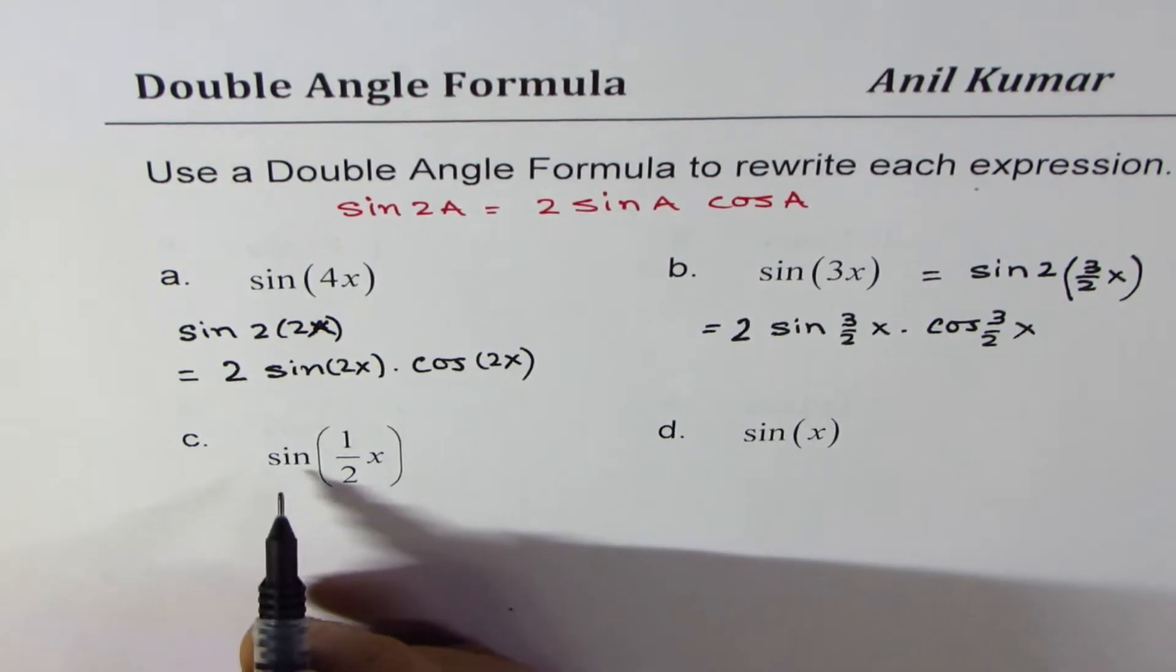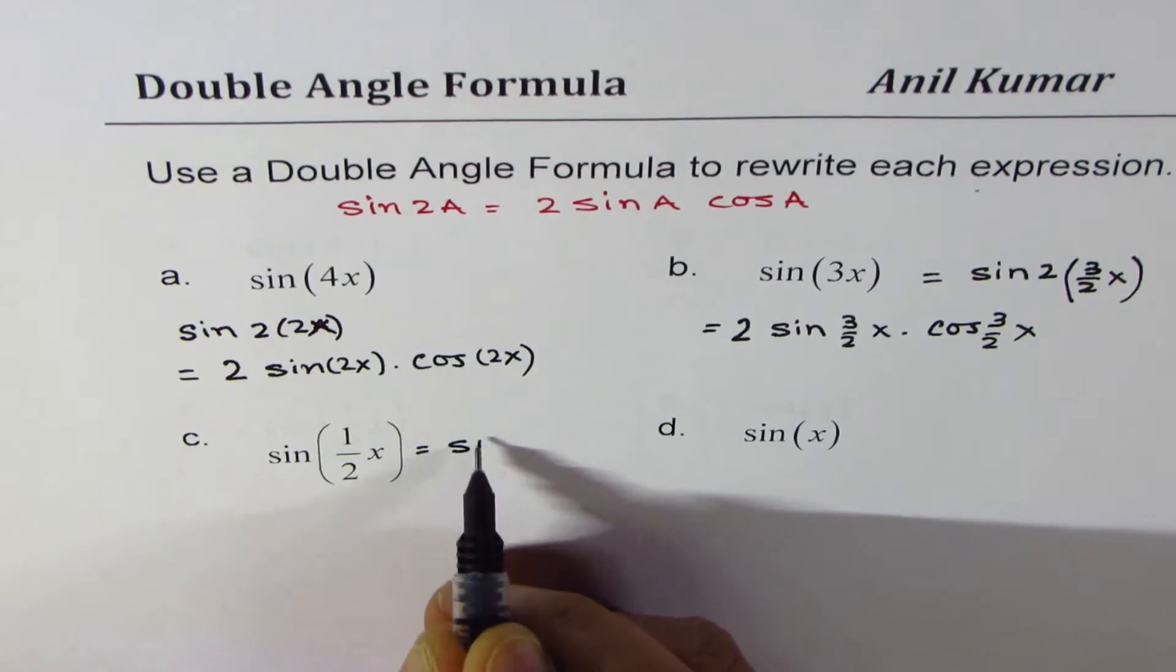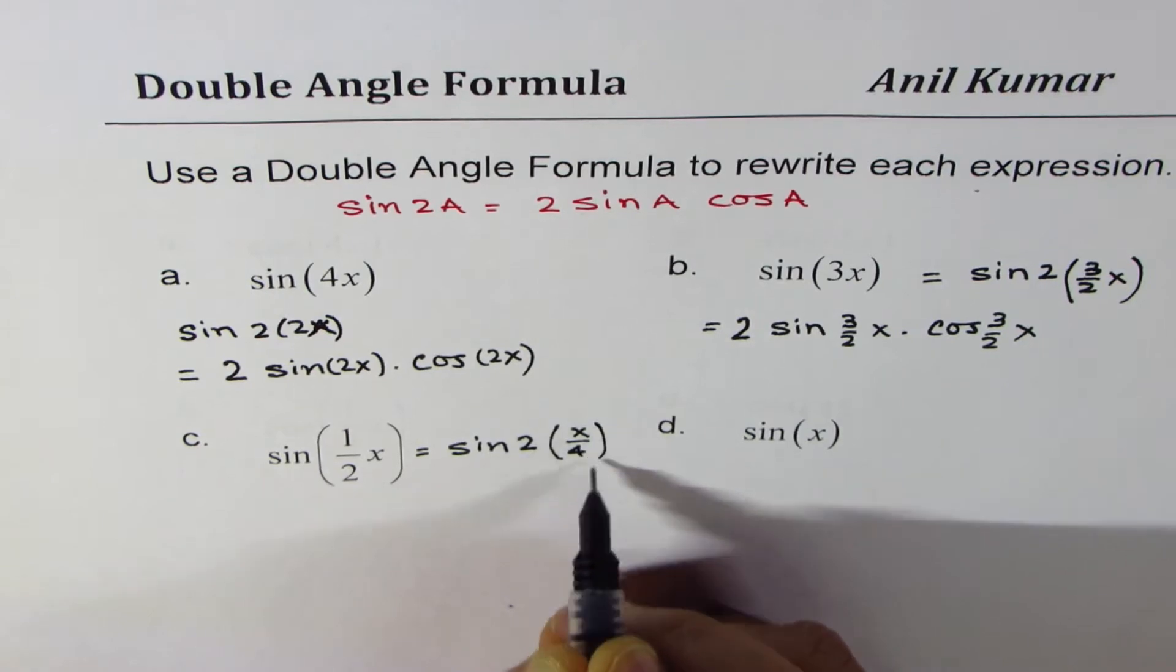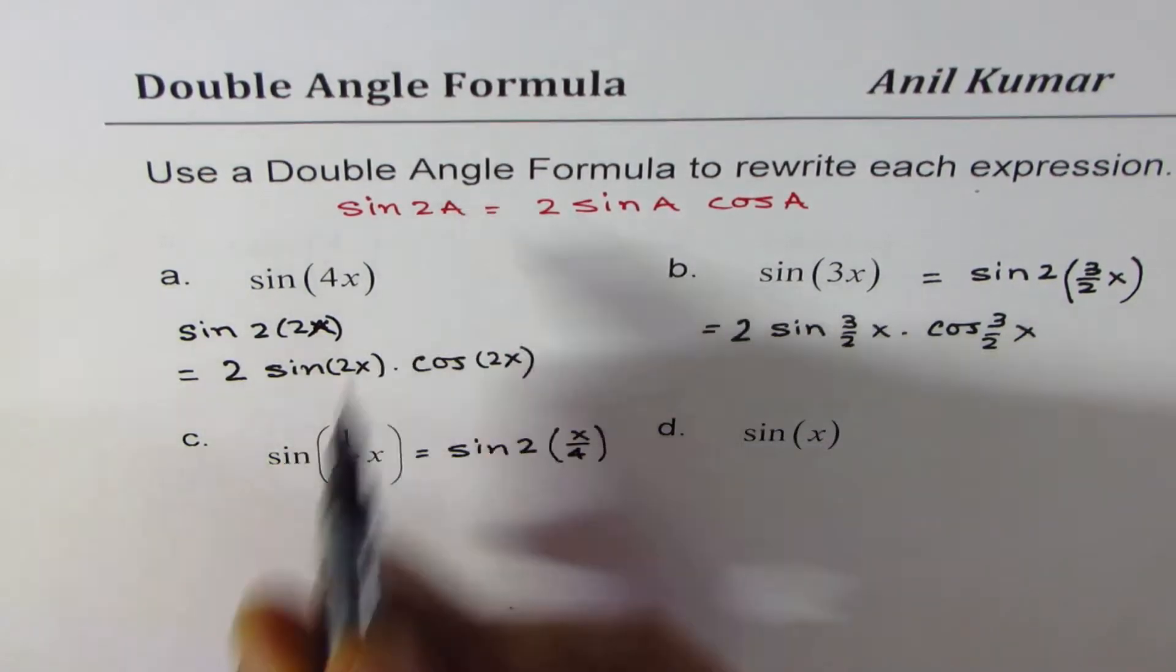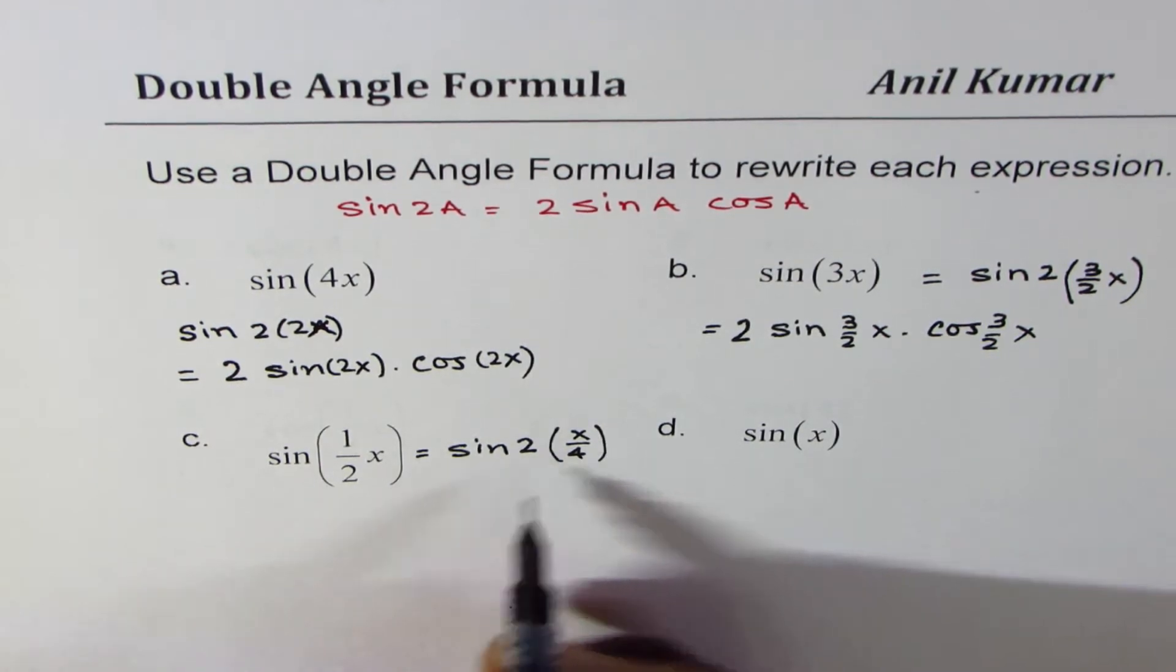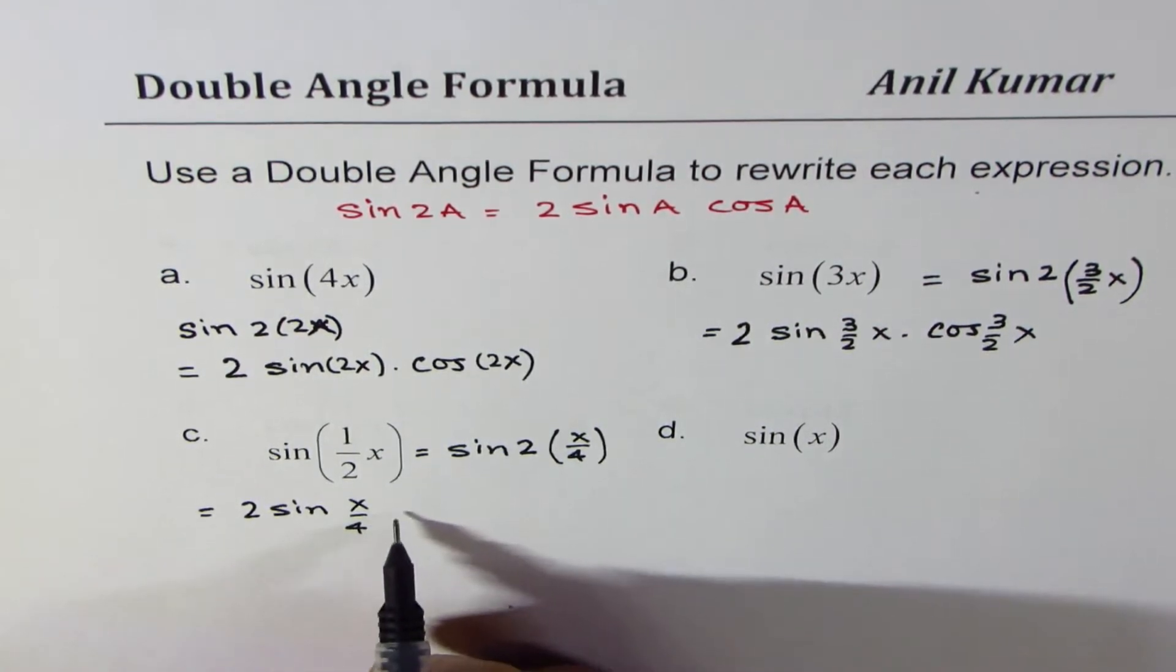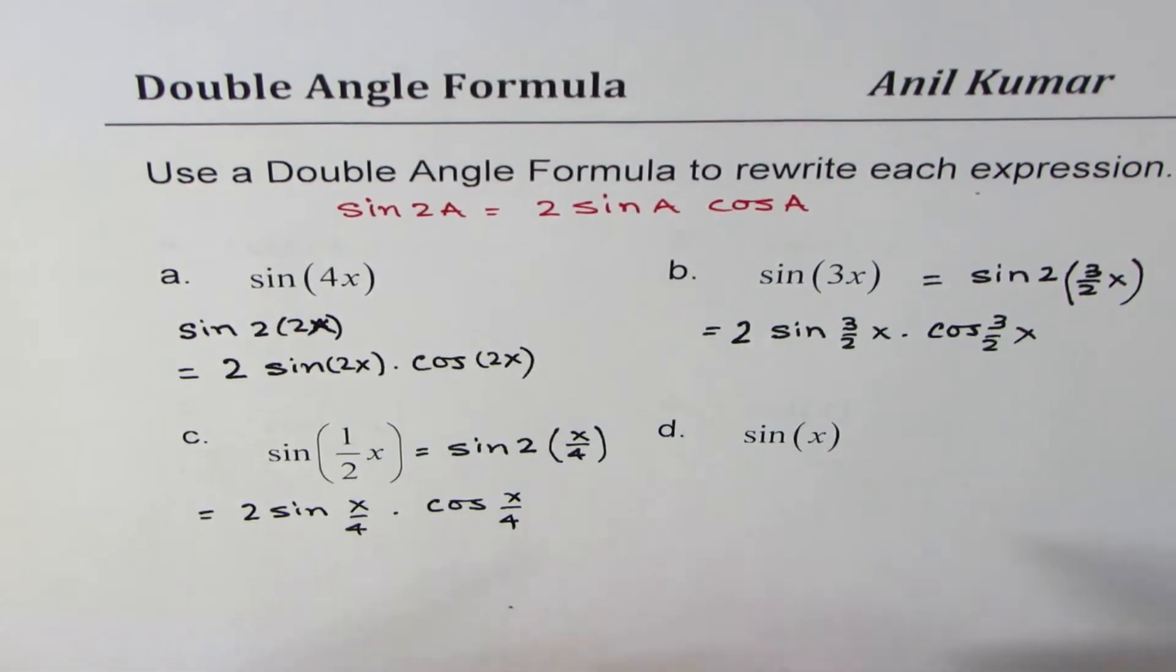Similarly, sine half x can be written as sine of 2 times what? 2 times x over 4, either way. And now we can apply the formula again, a is x over 4. 2 times a will give us 2 times sine x over 4 times cos x over 4. The last one